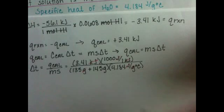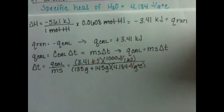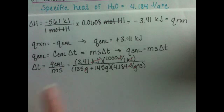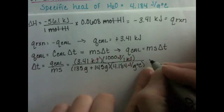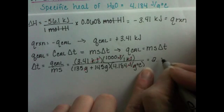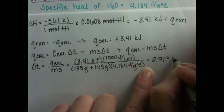Our joule units will cancel, and our answer will be left with units of degrees C, which is good because it is a temperature. So we're going to do 3.14 times 1,000 divided by 280 times 4.184, and that gives us a temperature change of 2.91 degrees C.